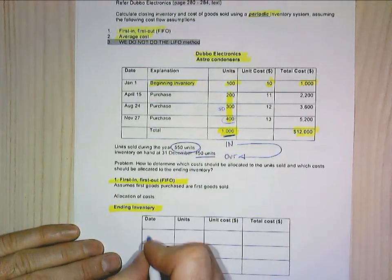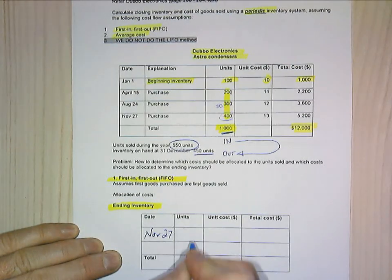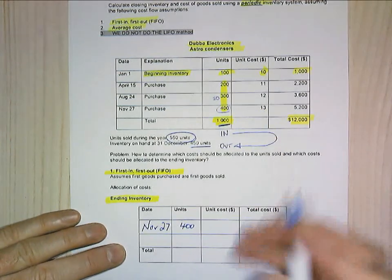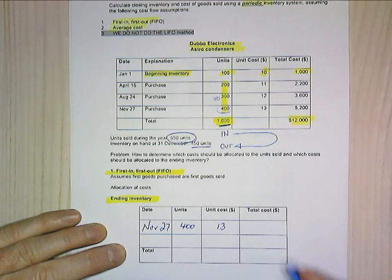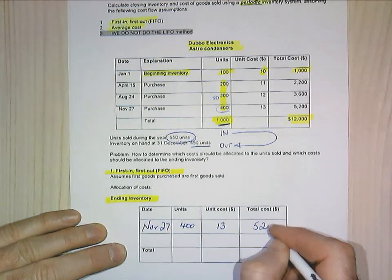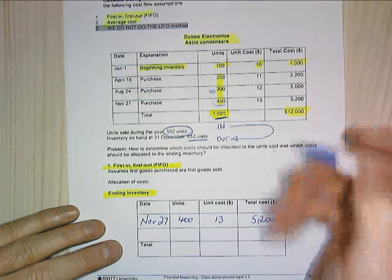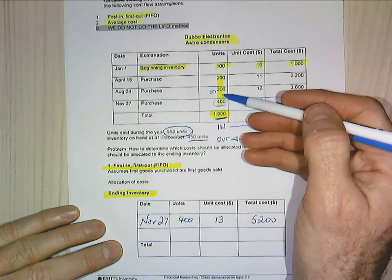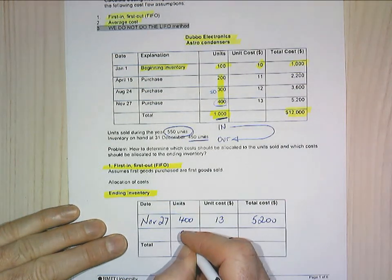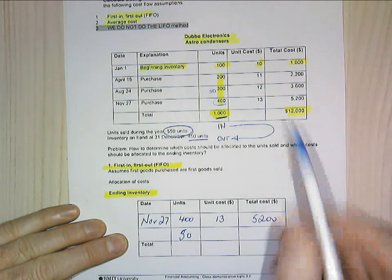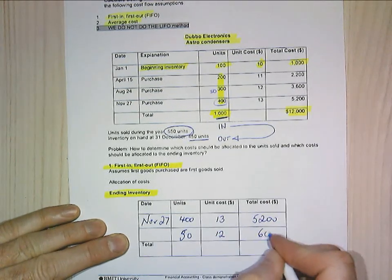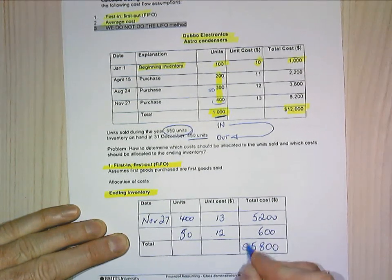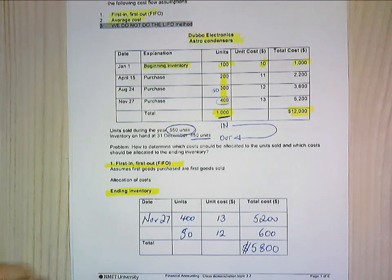Writing that out: for the November 27th purchase, I've still got 400 units at a unit cost of $13 each, which gives me $5,200. And I've got 50 of those 300 units at a cost of $12 each, which gives me $600. So my ending inventory is $5,800.